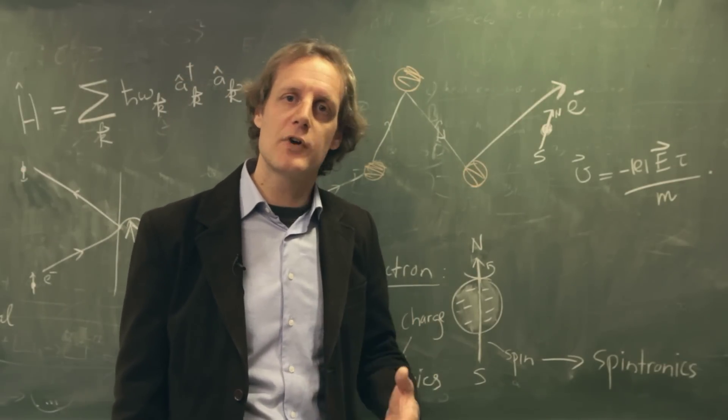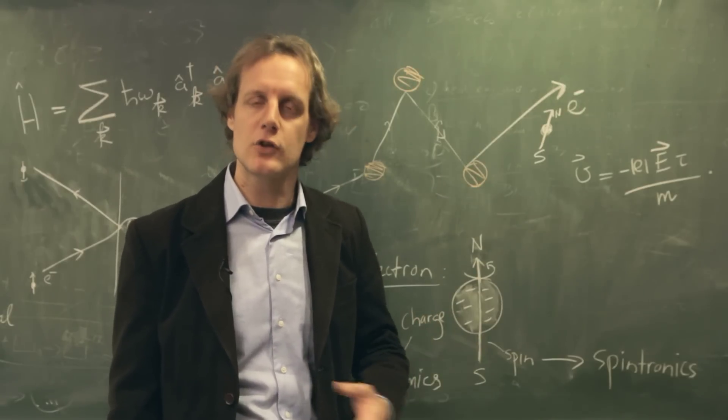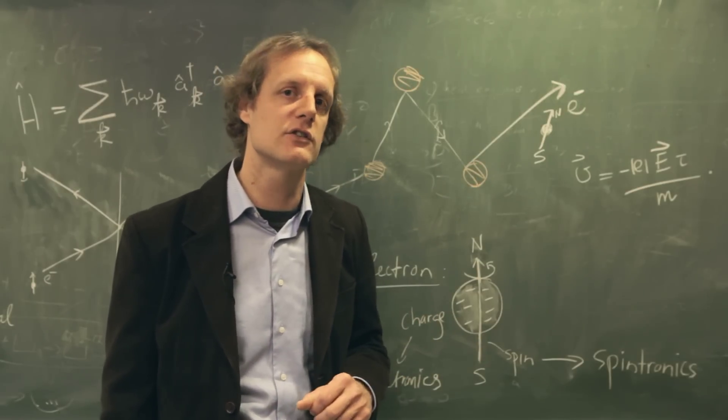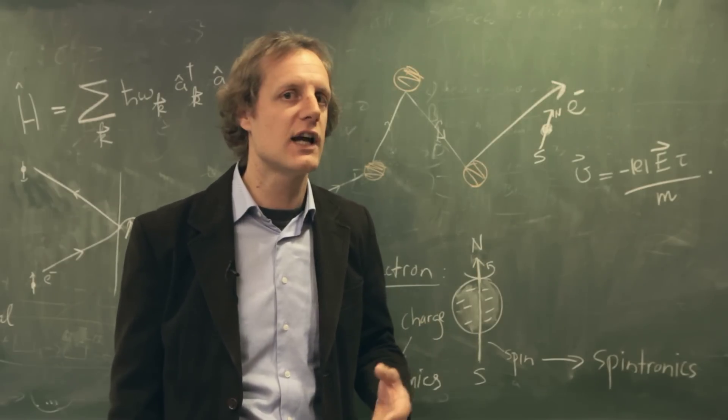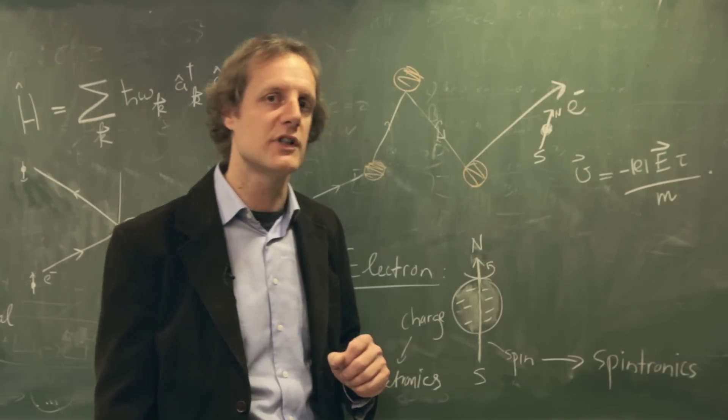Now, what we want to do in this program is to get around this, so to have currents in which the electrons actually don't move but are standing still. And we can do this by using another property of the electron that is charged, we can use the spin property of the electron.